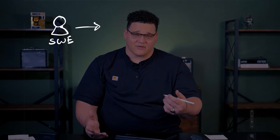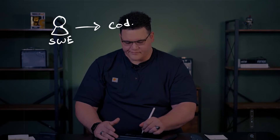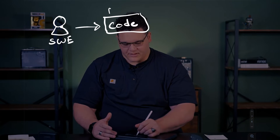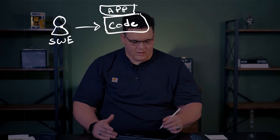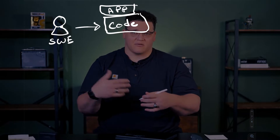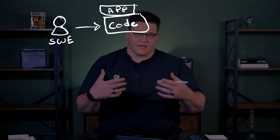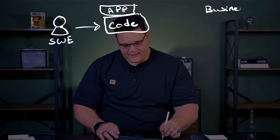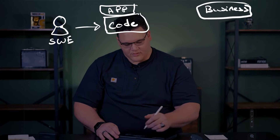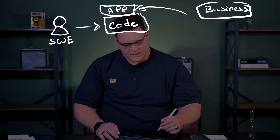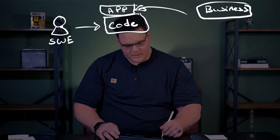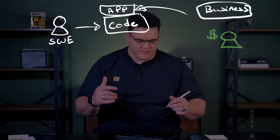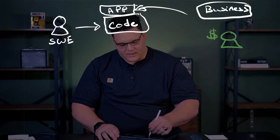Part of their responsibilities as a software engineer is to write code. The code that they're actually writing is related to an application. This application is made because the business wants to enhance something that's going to go in front of customers a lot of the time, to enhance their competitive advantage via software. So the software engineer works very closely with the business in order to make the app the business wants, and then put that app in front of customers.